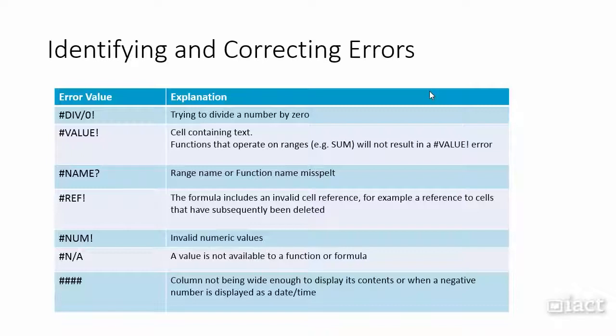#N/A means a value is not available to a function or formula. This is a very common occurrence with lookups. If it hasn't found a value or you haven't told it what to look up yet, generally you get the #N/A error.